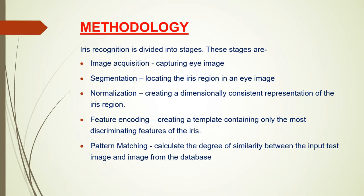The methodology of iris recognition is divided into stages. These stages include: image acquisition, where the eye image is captured; segmentation, where the iris region is located and segmented out; normalization, where Cartesian coordinates are converted into polar ones; feature encoding, where a template containing only the most discriminating features of the iris is created; and pattern matching, where we calculate the degree of similarity between the input test image and the image from the database.